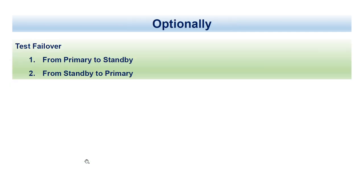The next part is optional. We will do a failover from primary to standby, and then bring the standby back to primary. At the end of this tutorial, our setup will look just like it did in the beginning — the original primary will be primary again, because we perform the failover from primary to standby and then back.